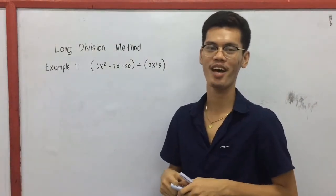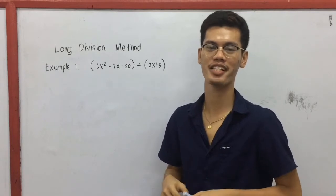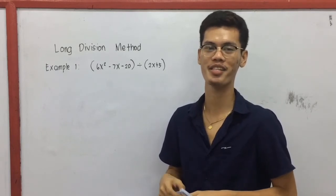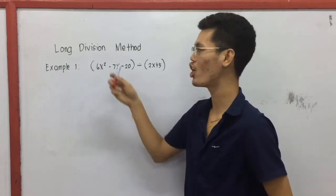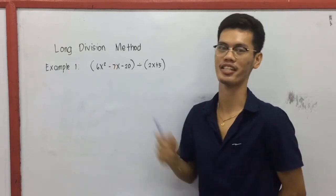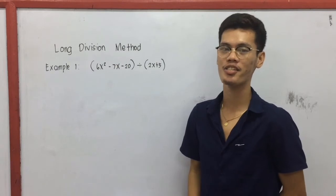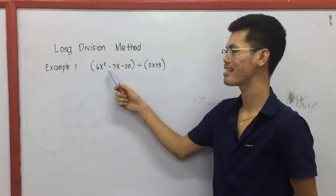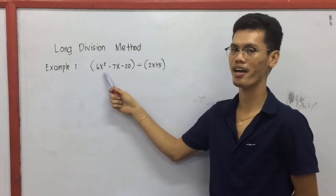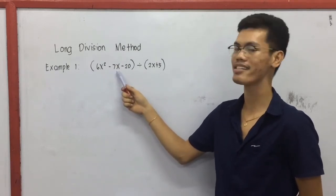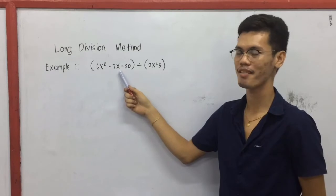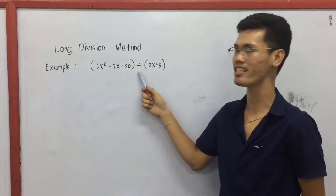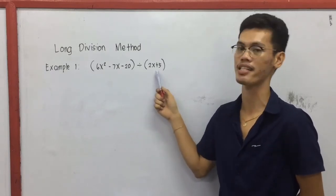Hi, good day. Our topic for today is about dividing polynomials using long division method. So for example, we have 6x squared minus 7x minus 20 is divided by 2x plus 5.